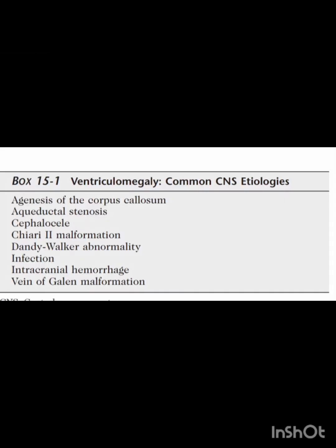So what are the CNS etiologies of ventriculomegaly? These include agenesis of the corpus callosum, aqueductal stenosis, cephalocele, Chiari 2 malformation, Dandy-Walker abnormality, infection, intracranial hemorrhage, and vein of Galen malformation.